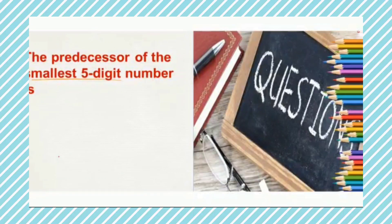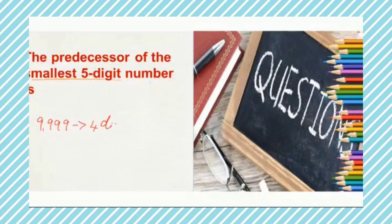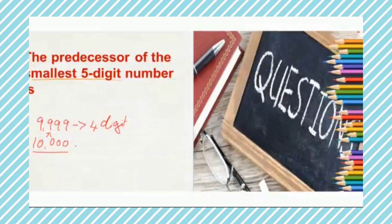So students, hope you understood the difference between predecessor and successor. Here is a question for you to test yourself: find the predecessor of the smallest 5-digit number. First, find which is the smallest 5-digit number. Till 9,999 it is a 4-digit number, and from 10,000 the 5-digit numbers start. So the smallest 5-digit number is 10,000. The predecessor of 10,000 is 10,000 minus 1, which gives us 9,999.